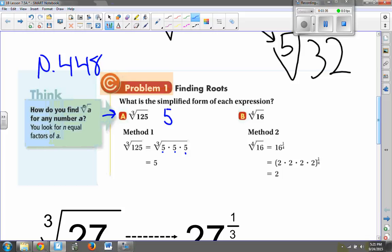So hopefully we can think and come up with five times five times five. Five times five is 25, times five again equals 125. So if we list out three fives and multiply them all together, we get 125. What that means is that the third root of 125 equals 5.